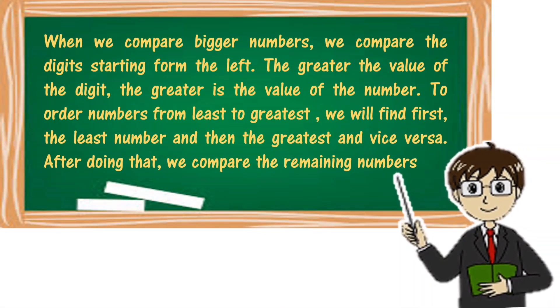When we compare bigger numbers, we compare the digits starting from the left. The greater the value of the digit, the greater the value of the number. To order numbers from least to greatest, we will find first the least number and then the greatest and vice versa. After doing that, we compare the remaining numbers.